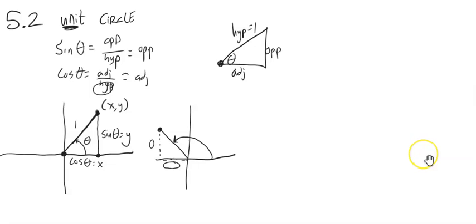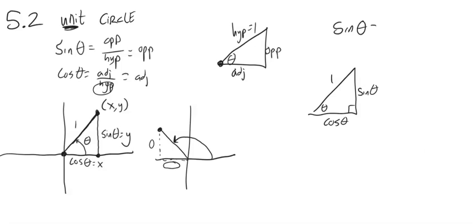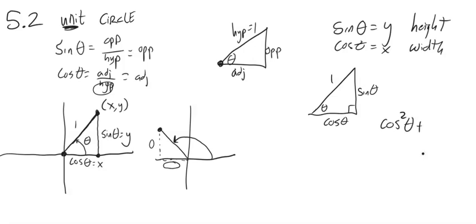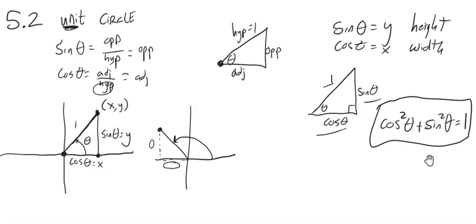Another key point: height is sine, and width is cosine. Sine of theta is y (height), cosine of theta is x (width). Using the Pythagorean theorem, cosine squared plus sine squared equals 1 squared, giving us the Pythagorean identity: cosine squared plus sine squared equals 1.